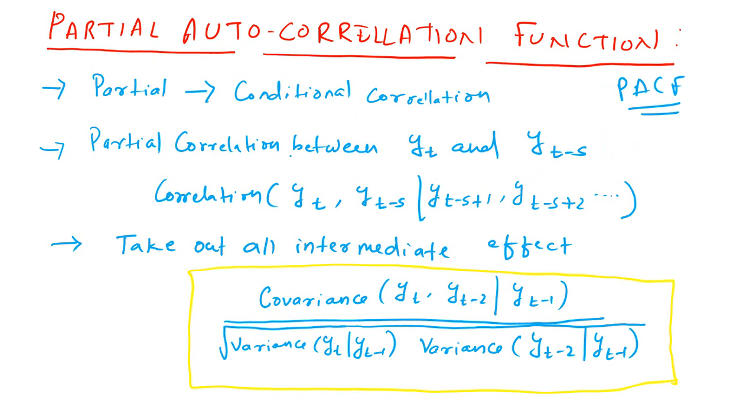So, partial autocorrelation is some sort of autocorrelation which is conditional in nature. Hence, it is also known as the conditional correlation. So, what is the condition here? Let us try to understand how partial correlation is different from a simple correlation.